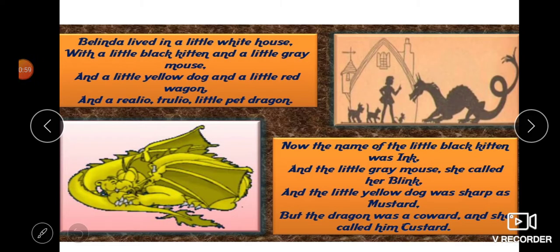This poem is written in the style of a ballad — a song or poem that tells a story. It has a regular rhythmic rhyming scheme. You are expected to identify the rhyming scheme in the poem and understand how the story develops.